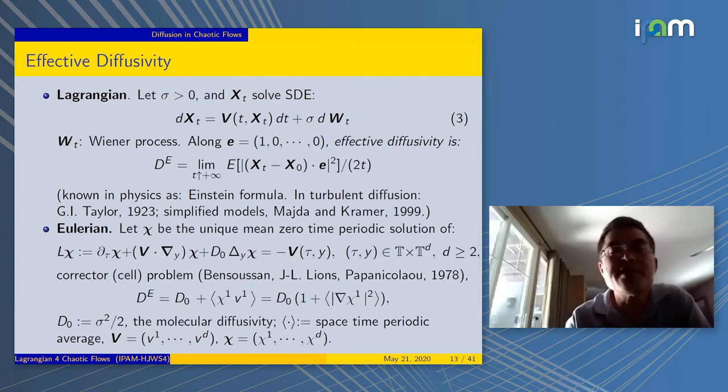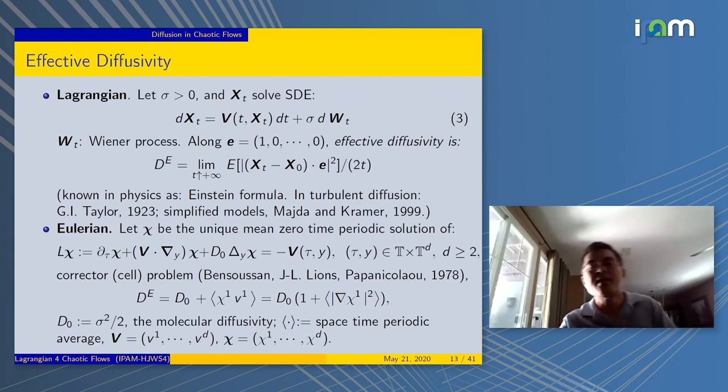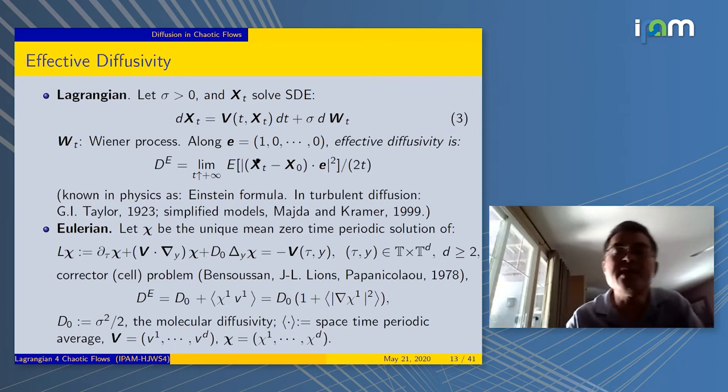So what is effective diffusivity? We're going to look at a stochastic dynamical system. The Itô equation, we add noise to it. This is the Brownian part or the Wiener process. Then you ask, what is the mean squared displacement? You look at the displacement, project in a certain direction.